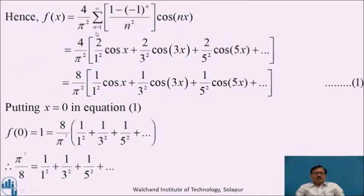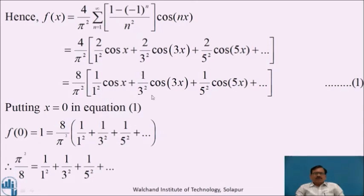Hence f(x) = (4/π²) × summation from n=1 to infinity of [1 − (−1)ⁿ]/n² · cos(nx). Putting values of n: for n=1, [1−(−1)] = 2, giving 2/1² · cos(x); for n=2, the bracket is 0; for n=3, we get 2/3² · cos(3x); for n=4 the bracket is 0; for n=5 we get 2/5² · cos(5x), and so on. Taking 2 common, this equals (8/π²)[1/1² · cos(x) + 1/3² · cos(3x) + 1/5² · cos(5x) + ···].